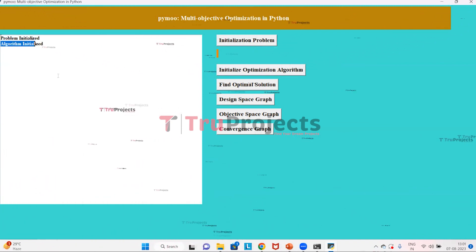Here, the algorithm is initialized. Now click on the find optimal solution button to find the optimal solution for the polynomial expression problem.